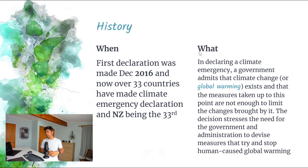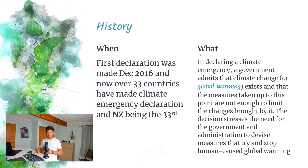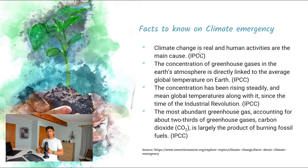In declaring a climate emergency, a government admits that climate change or global warming exists and that measures taken up to this point are not enough to limit the change brought by it. The decision stresses the need for governments to devise measures that try to stop human-caused global warming. I will talk about what this declaration means for the New Zealand government and what they're going to do by 2025 in following slides.